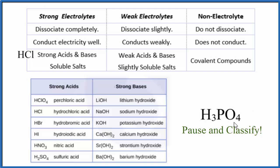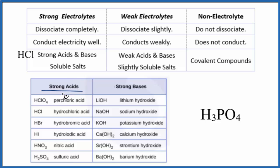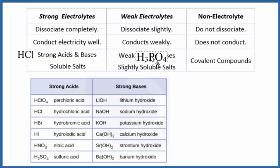Let's try H3PO4. Again, we have the H in front, so it's going to be an acid. But is it a strong or weak acid? We look at our list of strong acids, and it's not on the list. That means H3PO4 is going to be a weak acid, and if it's a weak acid, it's a weak electrolyte, so the solution would only conduct electricity weakly.